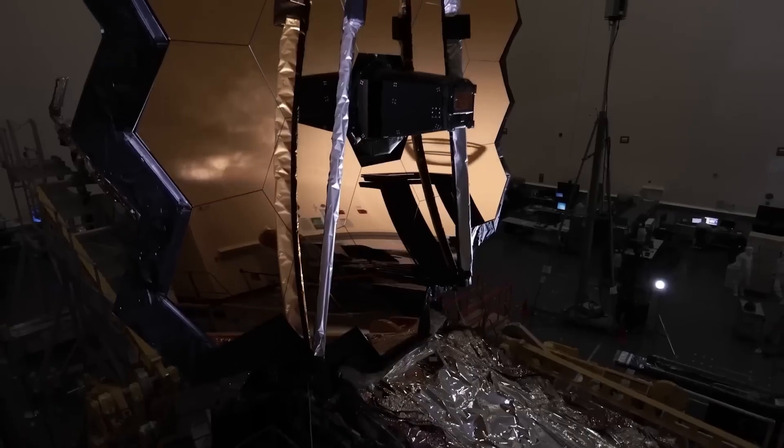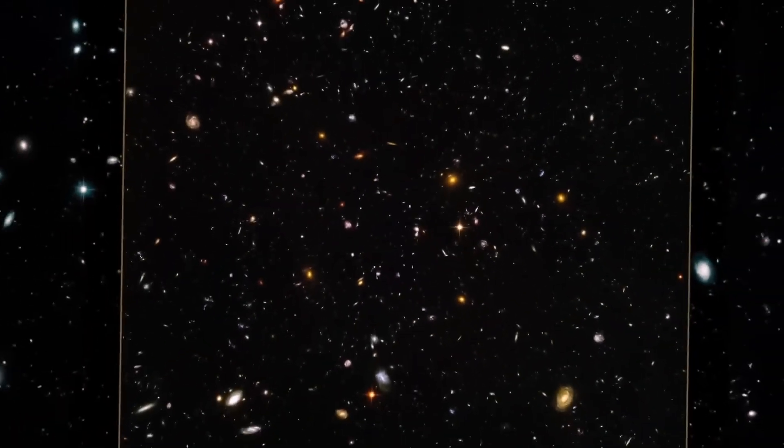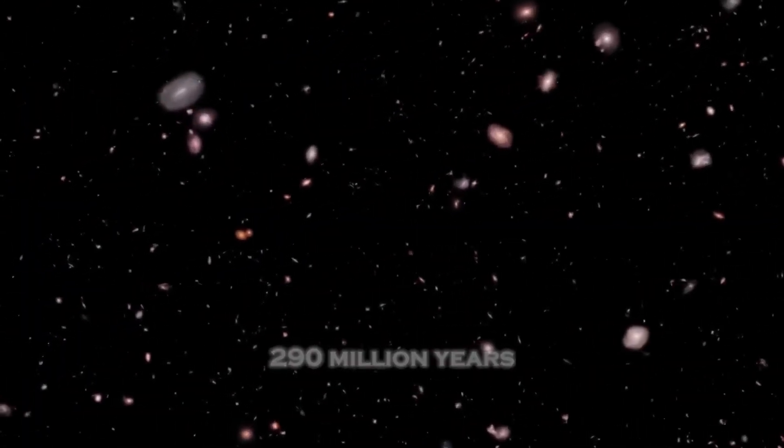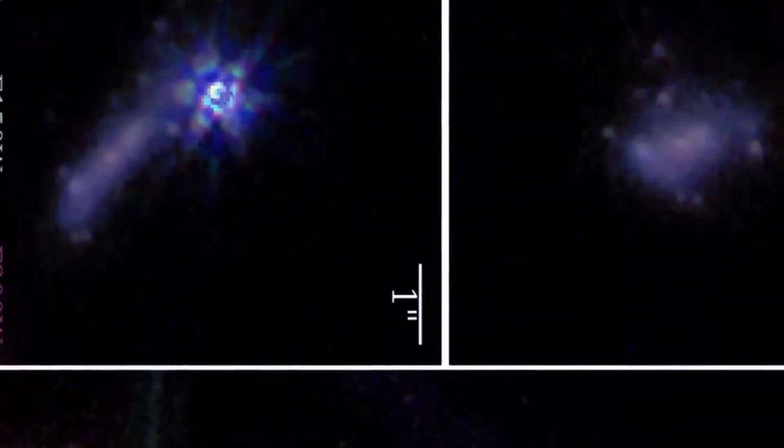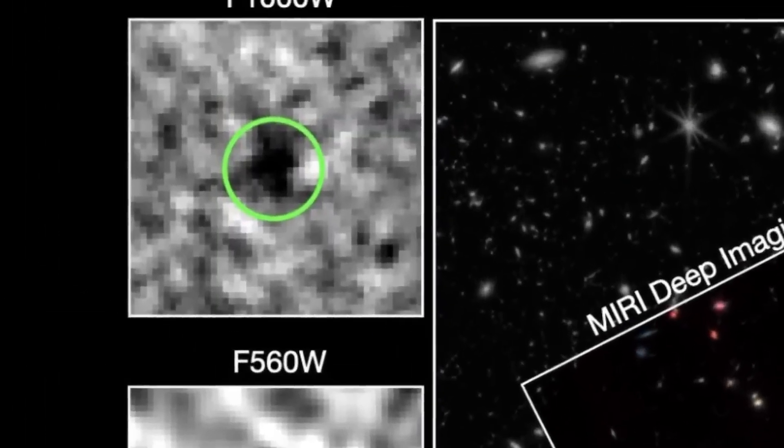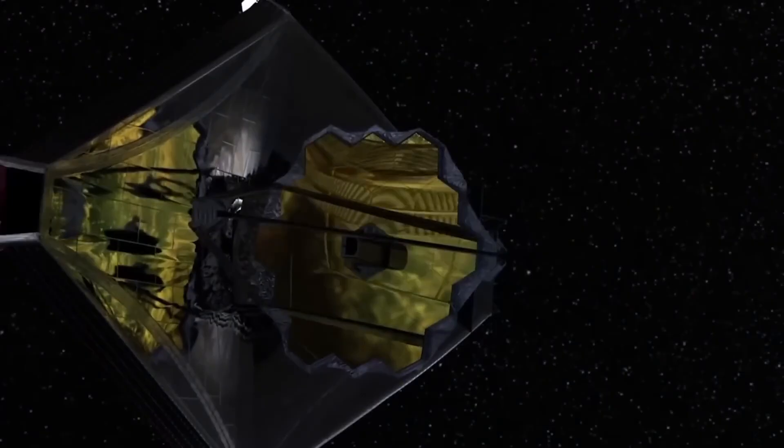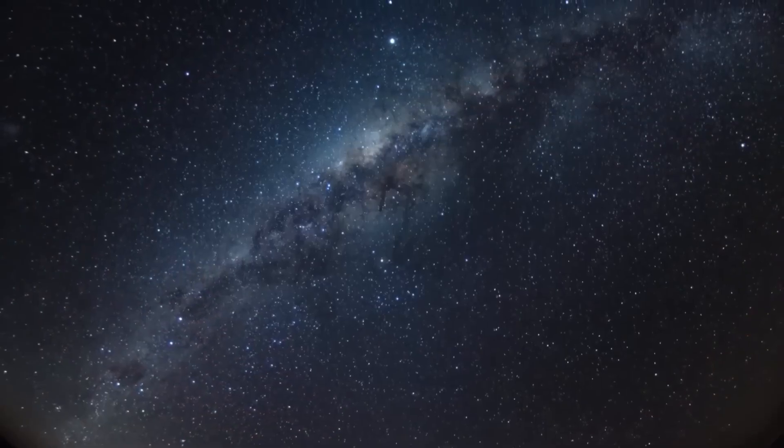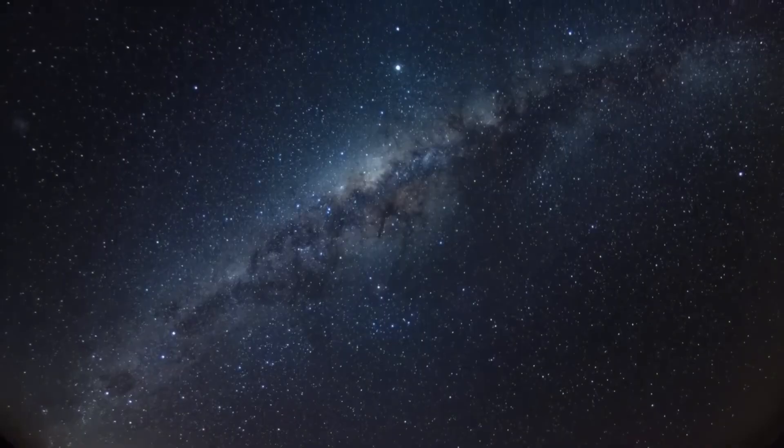The James Webb Space Telescope, our boldest venture into the void, has pierced the veil of the cosmos and returned with visions that defy every equation, every assumption we've clung to. In the quiet hum of its data streams, Webb hasn't just captured images - it's unearthed paradoxes that make the foundations of science tremble. Our models predicted a universe born in chaos, slowly knitting itself into order over eons. But Webb whispers otherwise, a cosmos that burst into maturity, defying time's arrow and challenging the sanctity of the Big Bang itself.